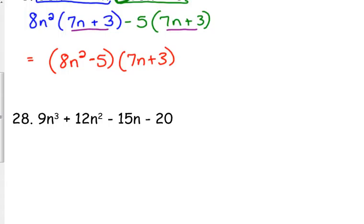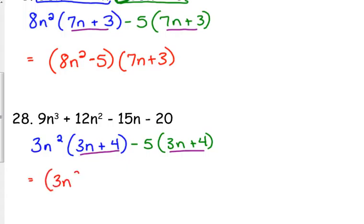Let's do one more of these. 9n³ + 12n² - 15n - 20. GCF of 9 and 12 is 3n², so we're left with 3n + 4. Between -15n and -20, we need to take out a -5, so we're left with 3n + 4. We get the same thing. If you don't get the same thing, you can't do it. So we are left with (3n² - 5)(3n + 4).